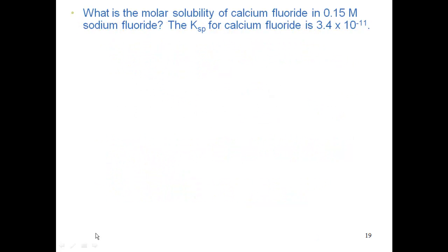What is the molar solubility of calcium fluoride in 0.15 molarity of sodium fluoride? The Ksp of calcium fluoride is 3.4×10⁻¹¹. Calcium fluoride and sodium fluoride share fluoride — that's a common ion problem. Since you're given a Ksp for calcium fluoride, that's a hint it's the insoluble salt; sodium fluoride has no Ksp given, so it's the soluble salt.